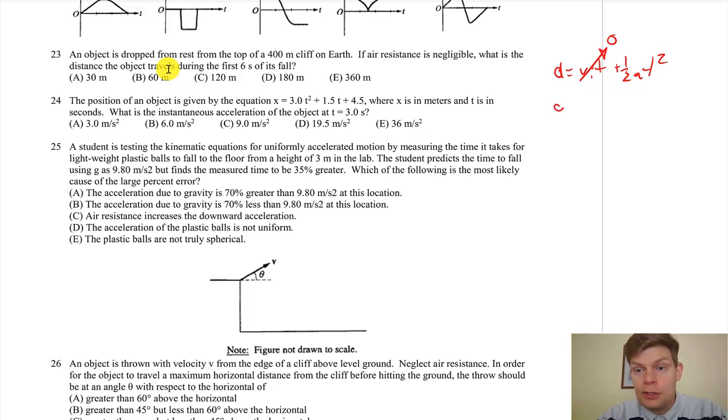Our initial velocity is zero because it was dropped, and then we want our displacement. It's going to be one half times 10 times 6 squared. If we want to do that, I'd probably do the 6 squared first—36 divided by 2 is 18 times 10. We got 180.